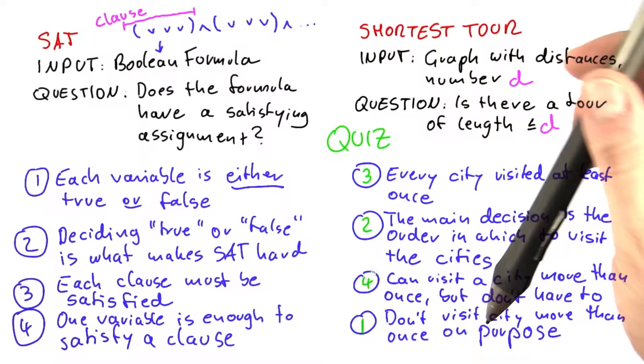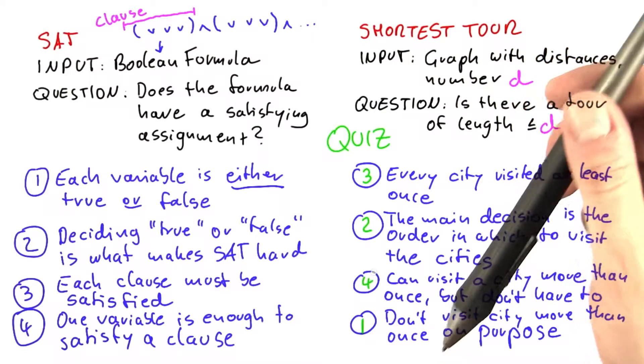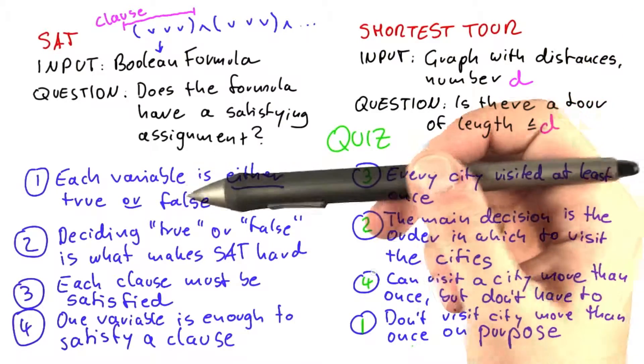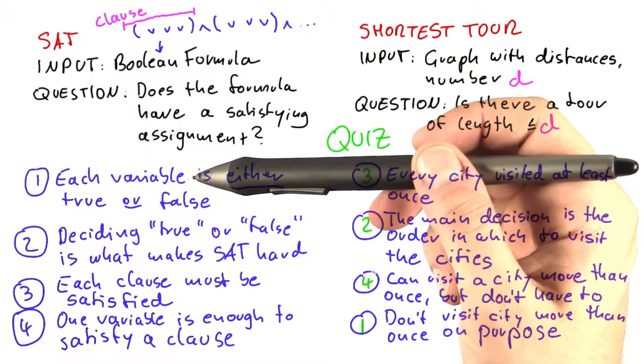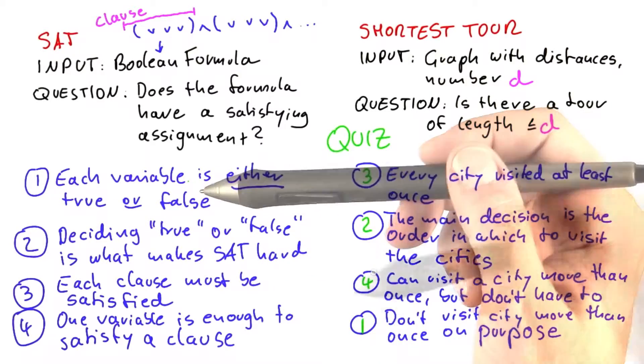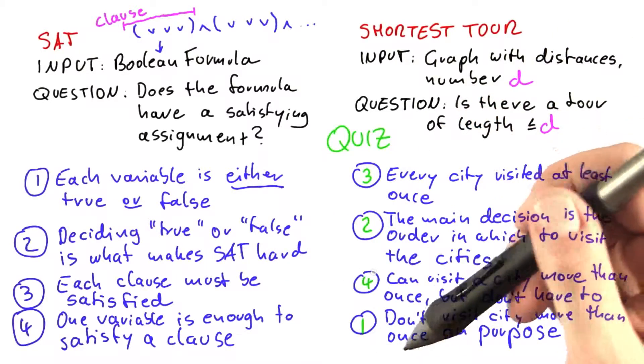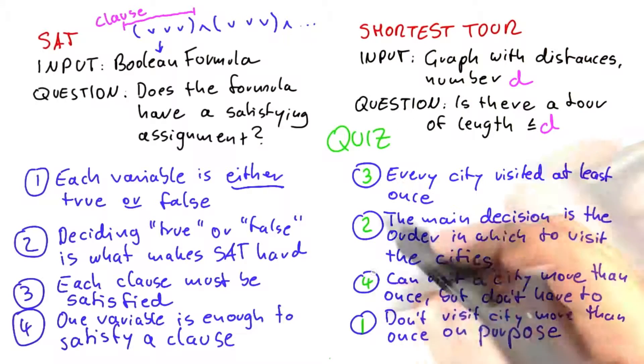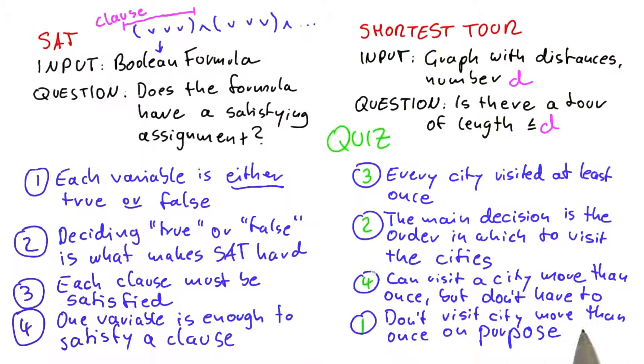It means you basically have to make a decision what city to visit next. And that is, in my mind, more or less close to saying I'm setting a variable to either true or false. Once you go along the shortest tour, you're always on your way to a new city. But again, I realize this might be a bit subjective here.